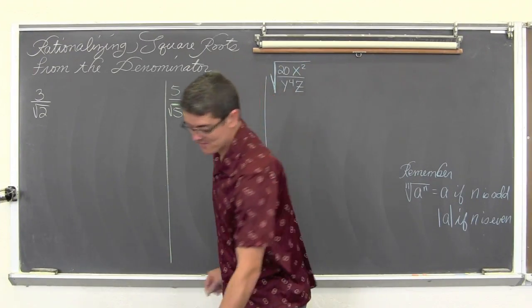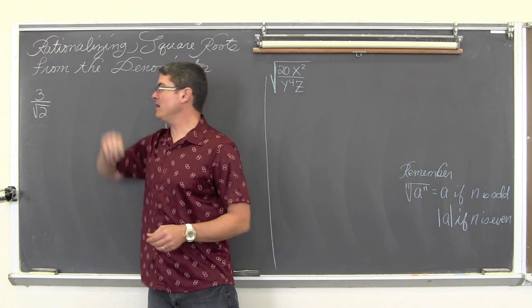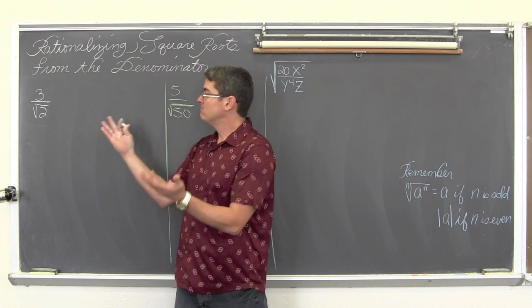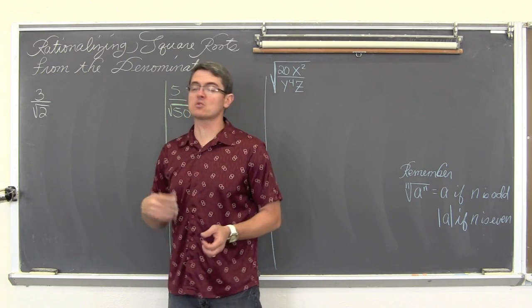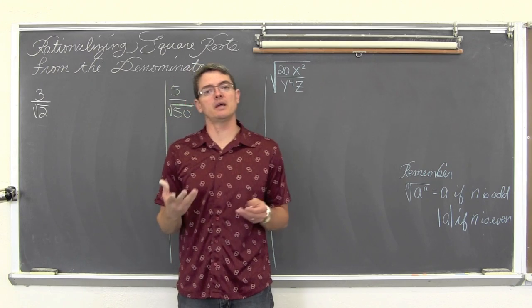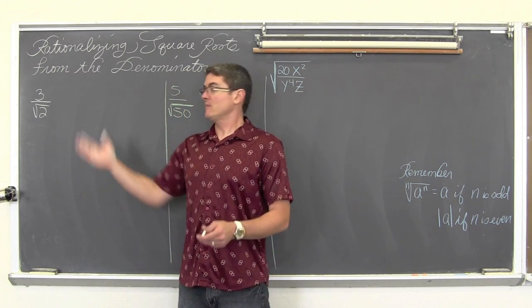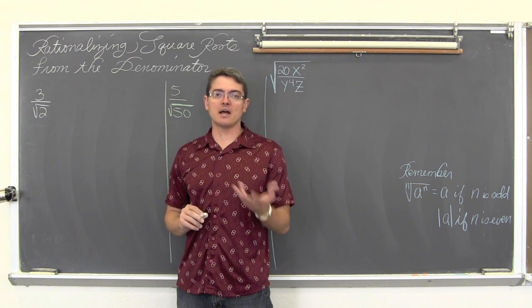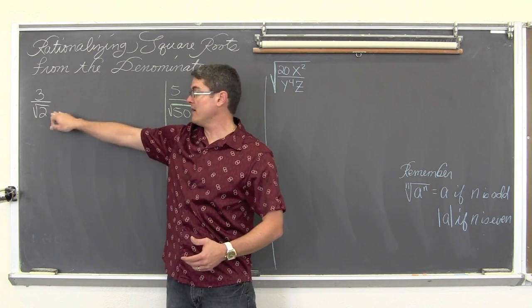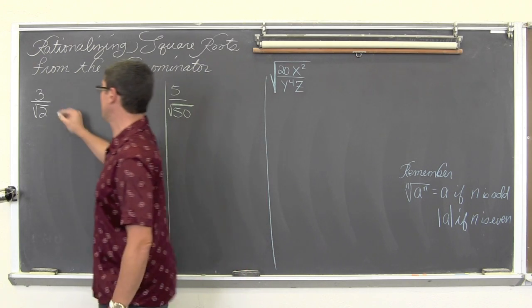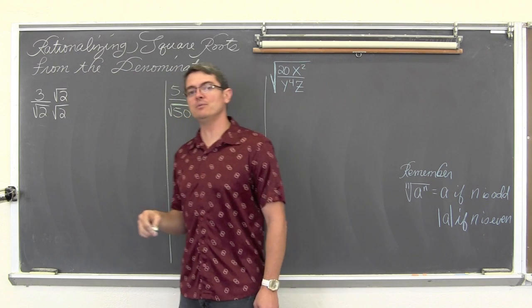Here are our three examples with increasing difficulty. We have 3 over square root of 2. We are supposed to simplify, but the numerator only has 3 and the denominator is square root of 2. There is no perfect square which is a factor of 2, so there is no simplifying required. We are just going to identify the square root in the denominator and multiply it to the numerator and denominator and re-simplify.